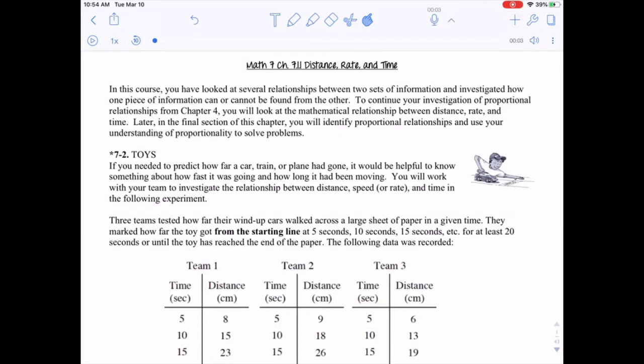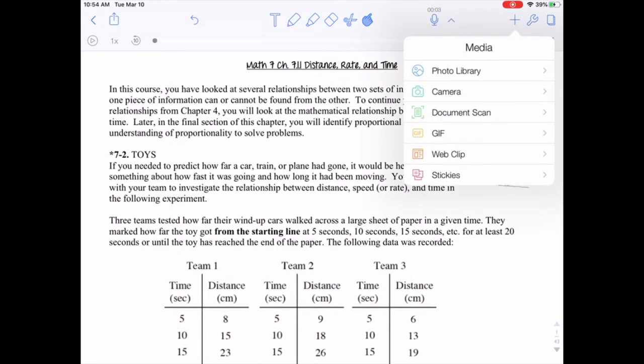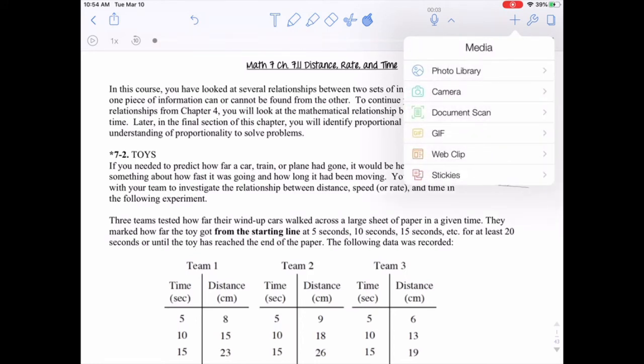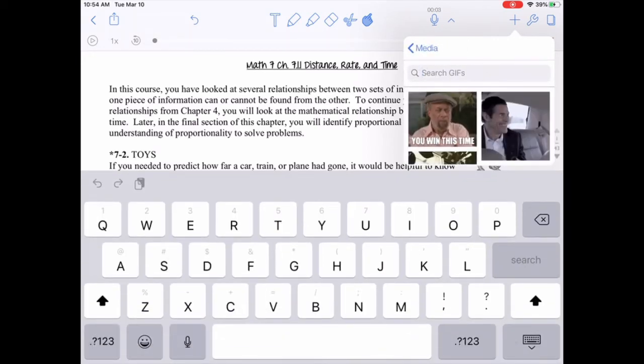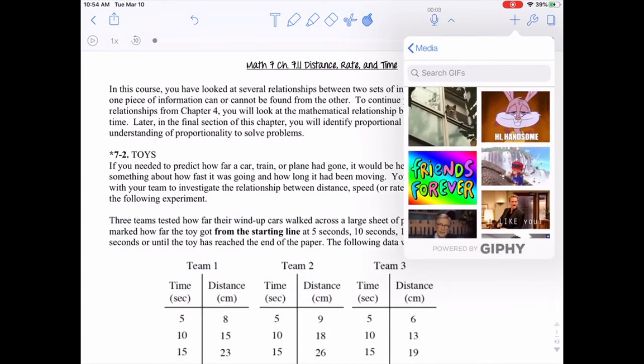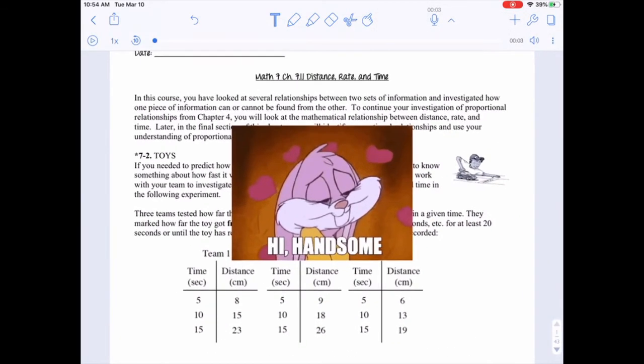There are so many other things over here that you can do. You can add pictures from your photo library. You can add stickers—there are so many different little stickers that you can add with different options. You can take a picture and add it in through the camera. You can add a GIF (I've heard it both ways), so you can add funny things for your kids if you wanted to add a little fun picture in there.